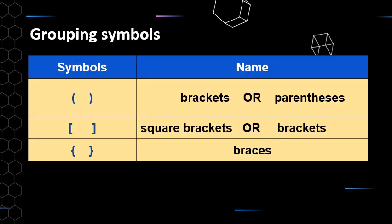What do I mean by grouping symbols? The reason I use this term is because it's in the syllabus. People have different words for the same thing — you might know these as brackets, used in English writing, or some people refer to them as parentheses. There are also square brackets and braces. These are the three main types of grouping symbols you will see in maths. This week we're focusing on brackets (parentheses) and square brackets.